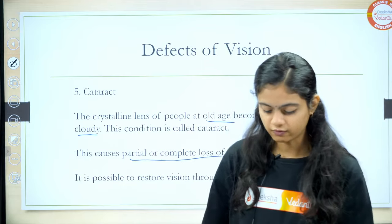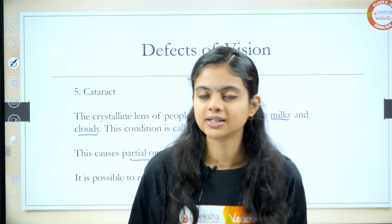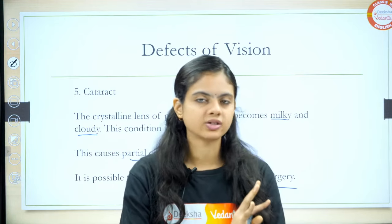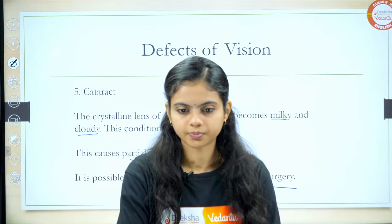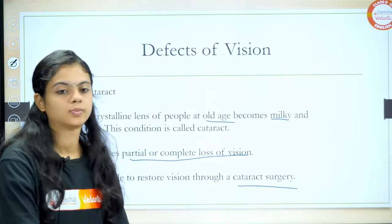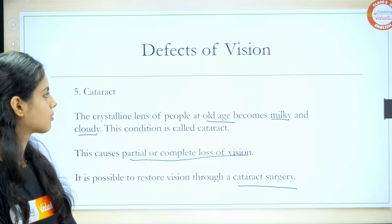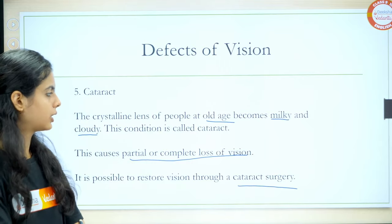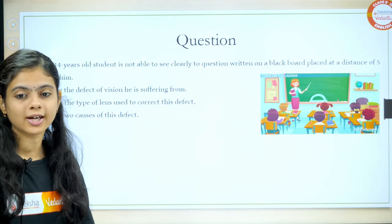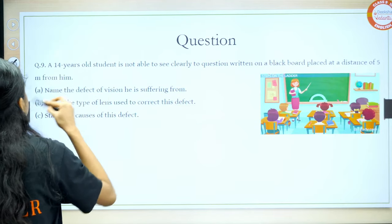I hope till here everything is clear. If there is anything you want to tell, you can write it in the comment section. Also there is a homework question — you can read it and answer in the comment section. A 14-year-old student is not able to see clearly the question written on the blackboard placed at a distance of 5 meters. Name the defect of vision he is suffering from, name the type of lens used to correct this defect, and state the causes of this defect.